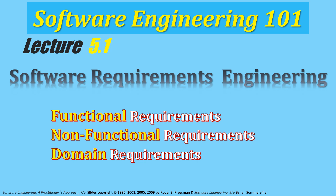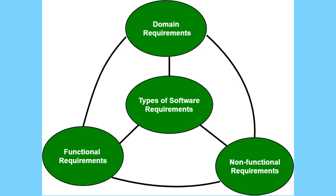There are three types of requirements. Domain requirements come from the specific area the software is meant for, like rules or regulations it needs to follow. Functional requirements are about what the software should do, like logging in or handling data. Non-functional requirements focus on how the software should work, like how fast or how secure it should be.